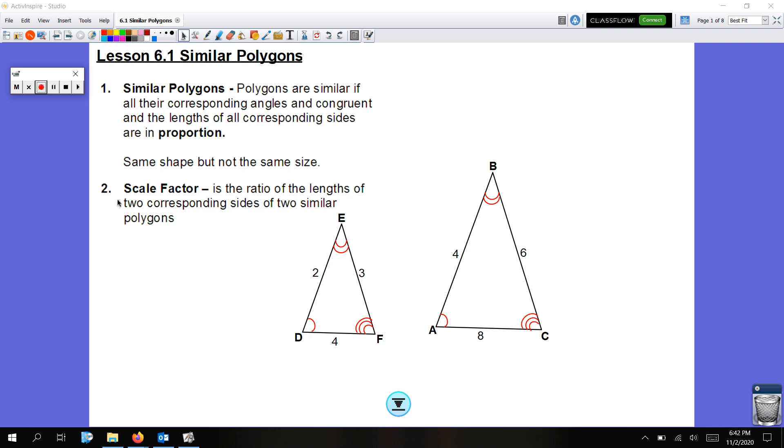Another really super important thing you need to know is scale factor. That is the ratio of the lengths of two corresponding sides of two similar polygons. The scale factor has to be the same for all three, or four, or five, or however many sides the polygons have. All the sides must have the same scale factor.